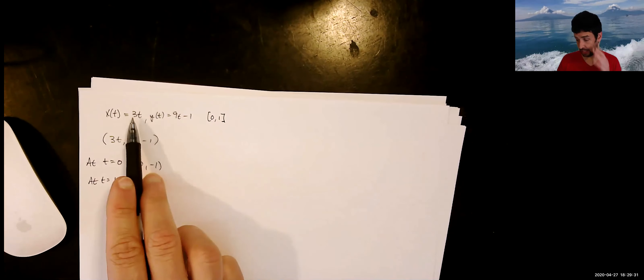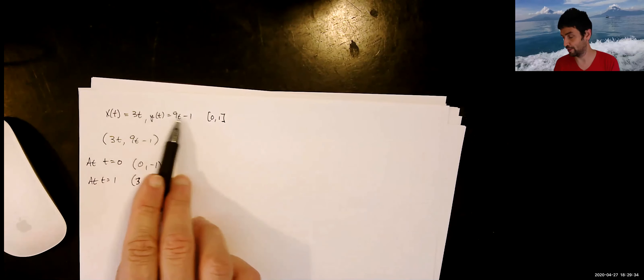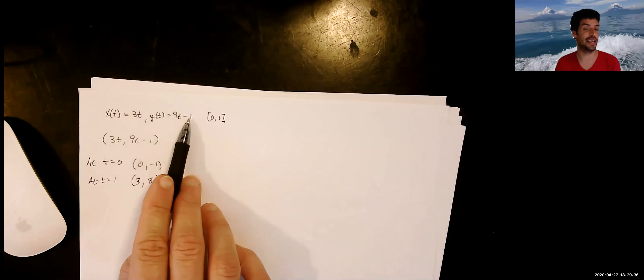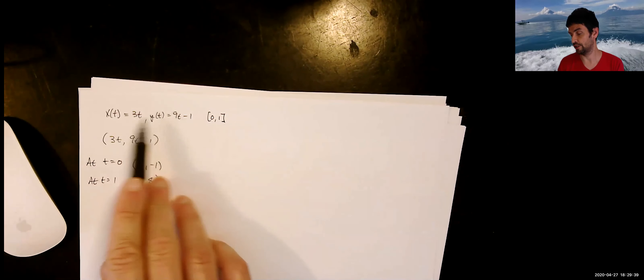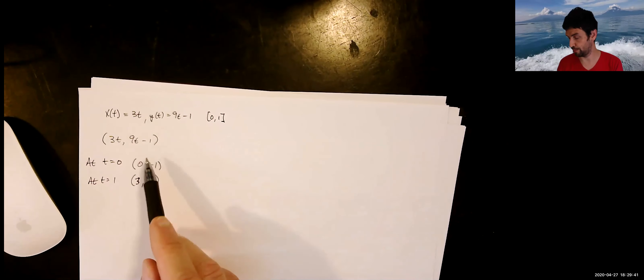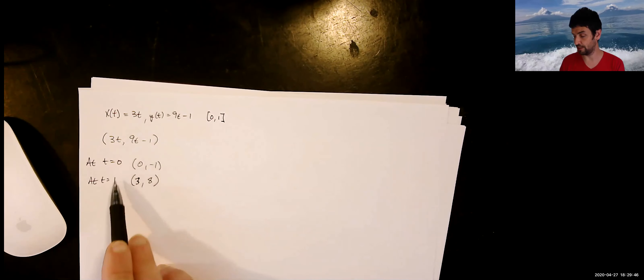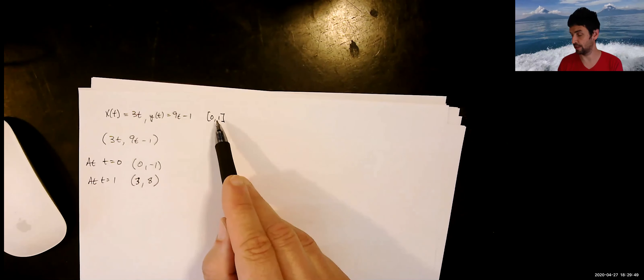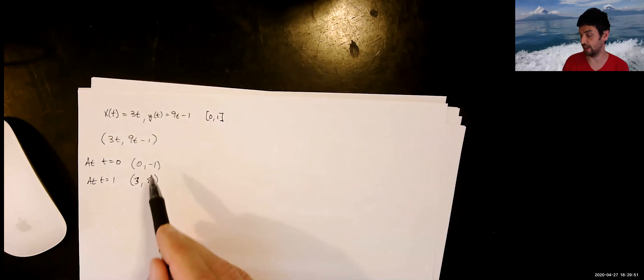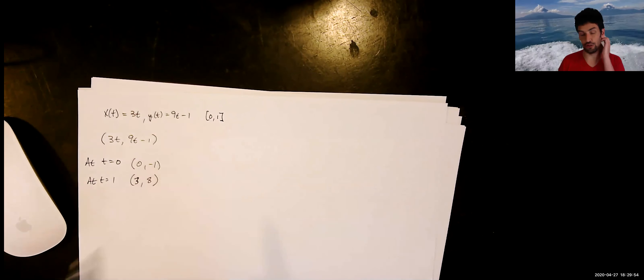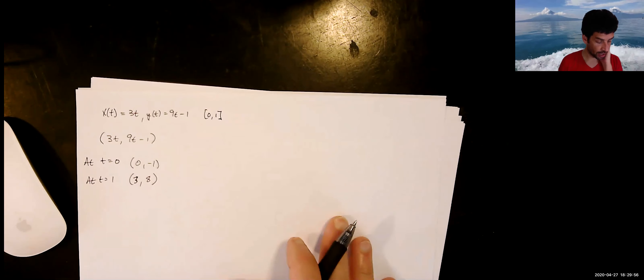I'm going to start with the following parametric equations: x of t is equal to 3t, y of t is 9t minus 1, over the interval 0 to 1. We can think of it as coordinate pairs — we're putting in values of t and these parametric equations are spitting out coordinate pairs, traveling along a line because they're both linear functions.